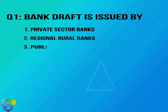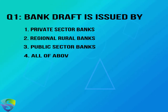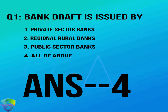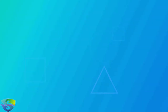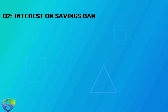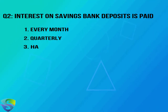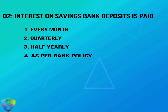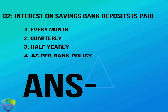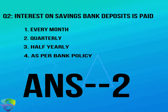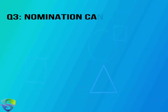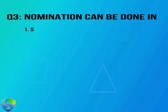Options: private sector banks, regional rural banks, public sector banks, or all of the above. Answer is option 4: all of the above. Question two: interest on savings bank deposits is paid — every month, quarterly, half yearly, or as per bank policy? The right answer is option 2: quarterly.